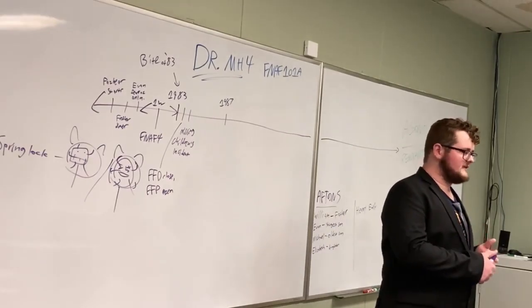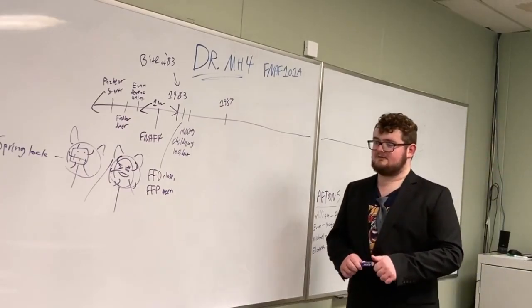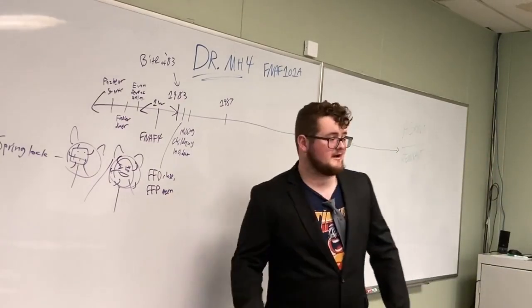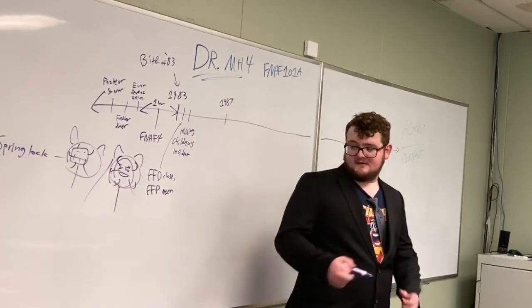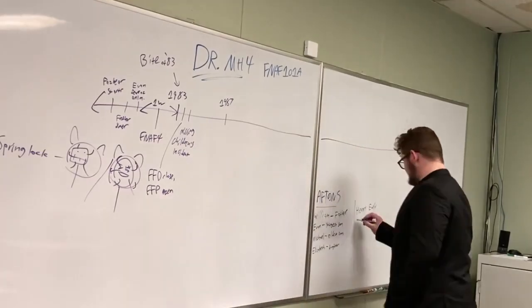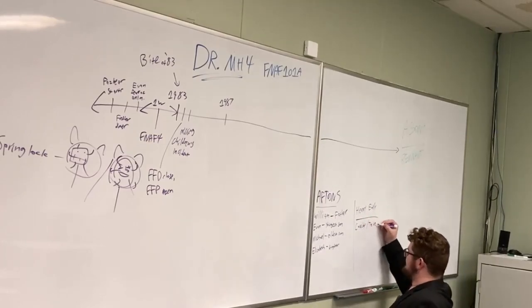So, we know Susie goes into Chica. I can't remember the other kids' names, but they go into Freddy, Bonnie, and Foxy. And there is a fifth child who is put in Golden Freddy's suit. And that child's name is Cassidy. So, Cassidy is an important character. Cassidy slash the vengeful spirit.